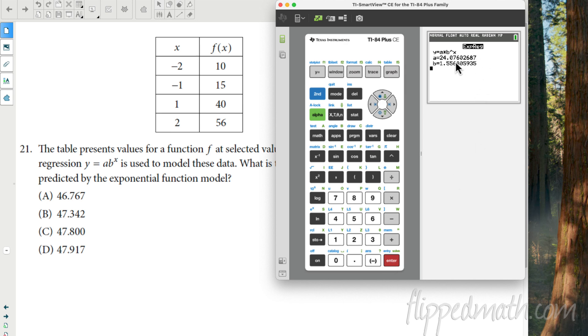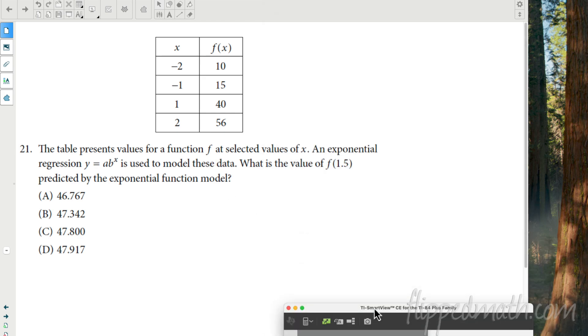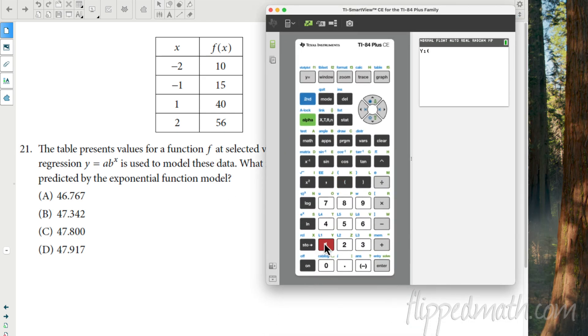So when I do that, check this out. I get values for A and B, but when I hit the Y equals, the equation is right in there. So now from the home screen, I can just hit vars again, go to the right, hit function. And I want that Y1 again, because that's where that function is. And I want to find f of 1.5. Is that what they told us? F of 1.5. We're going to plug that in.